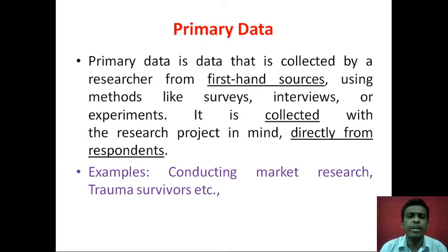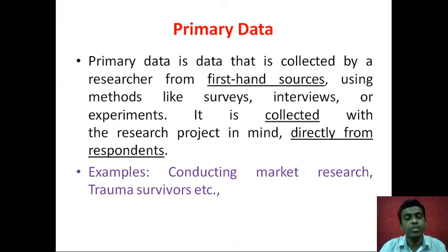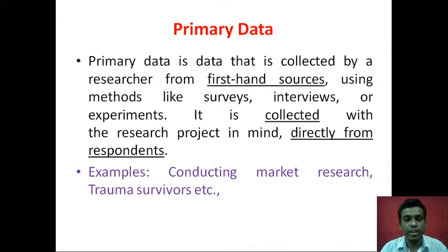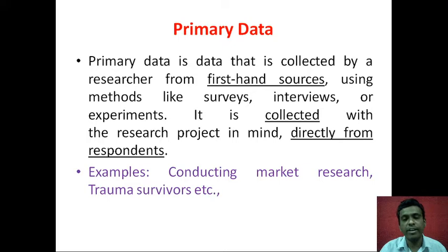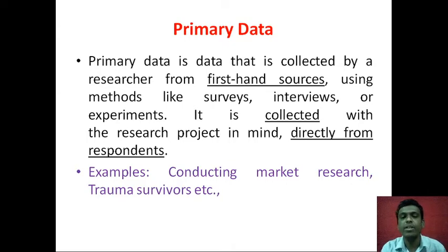Various methods used for collection of primary data include surveys through questionnaires, interviews, experiments, and observations. It is generally collected with the research project in mind. Different researchers have different topics and subjects of study. When a researcher collects original first-hand data, he tries to collect data that is relevant and specific to his study — directly from the respondents themselves, with no intermediary.